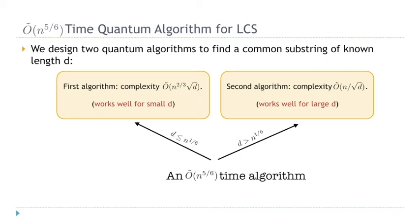We designed two separate algorithms. The first works well when D is small, with complexity n^(2/3) · √D. The second works well when D is large, with complexity n / √D. If D is bounded by n^(1/6), we run the first algorithm; otherwise, we run the second. In the worst case, the runtime is bounded by n^(5/6).